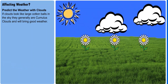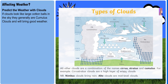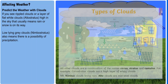Looking at clouds makes it very possible for us to predict the weather. Cumulus clouds normally bring good weather. Altostratus clouds usually mean rain or snow. And nimbostratus clouds tend to have quite a high chance of precipitation.